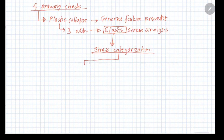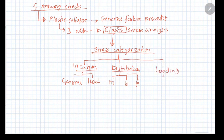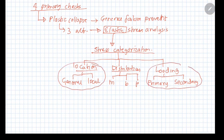For doing plastic collapse, there are 3 alternatives, out of which we looked at the elastic stress analysis alternative. In the elastic stress analysis, one key idea is stress categorization, and the other is that you use a perfectly elastic material. The stress categorization is done in 3 ways: based on location — general or local stresses; based on the distribution — membrane, bending, and peak stress; and based on the type of loading — primary or secondary stresses.